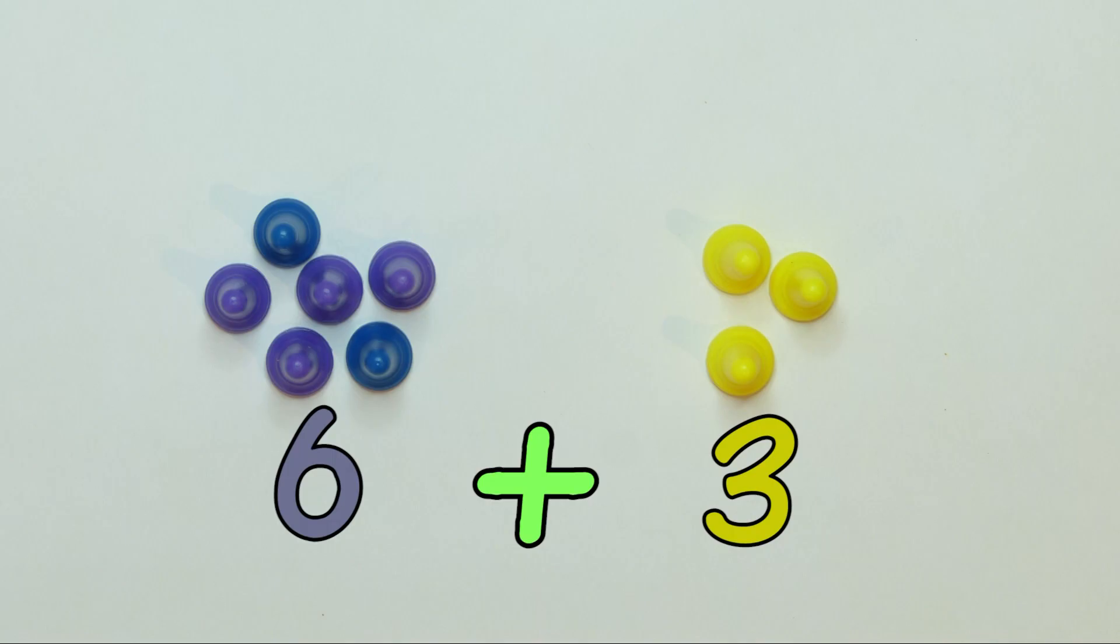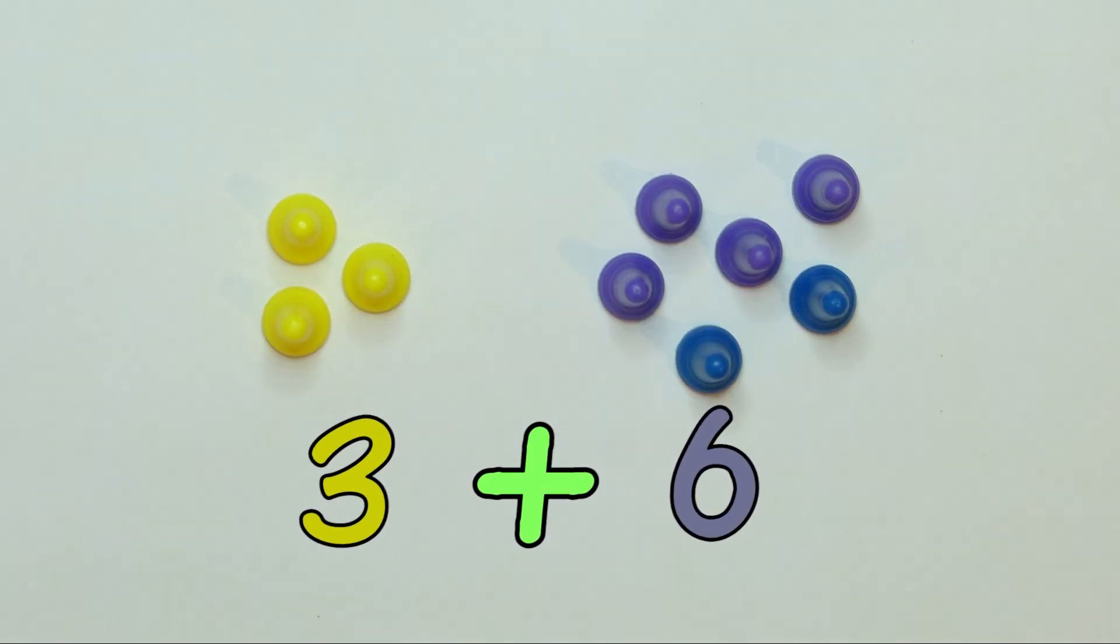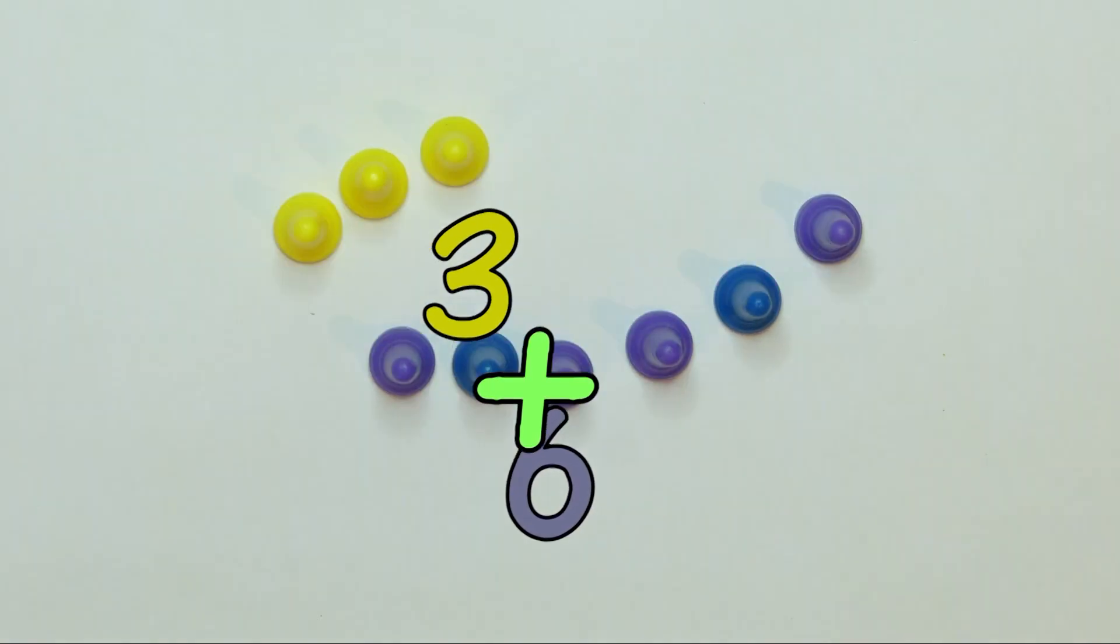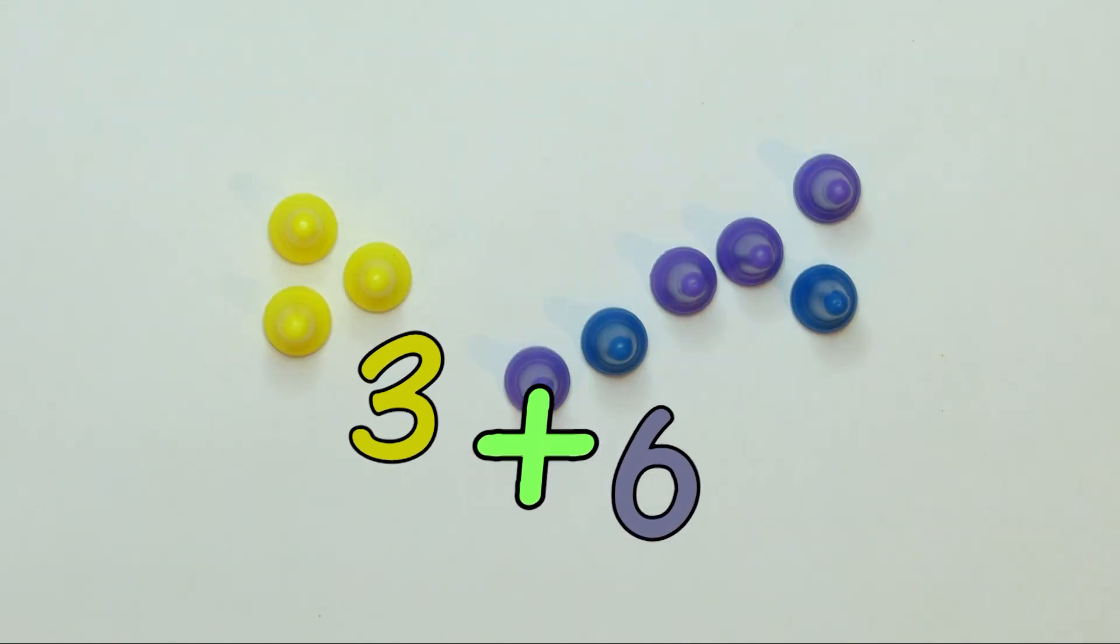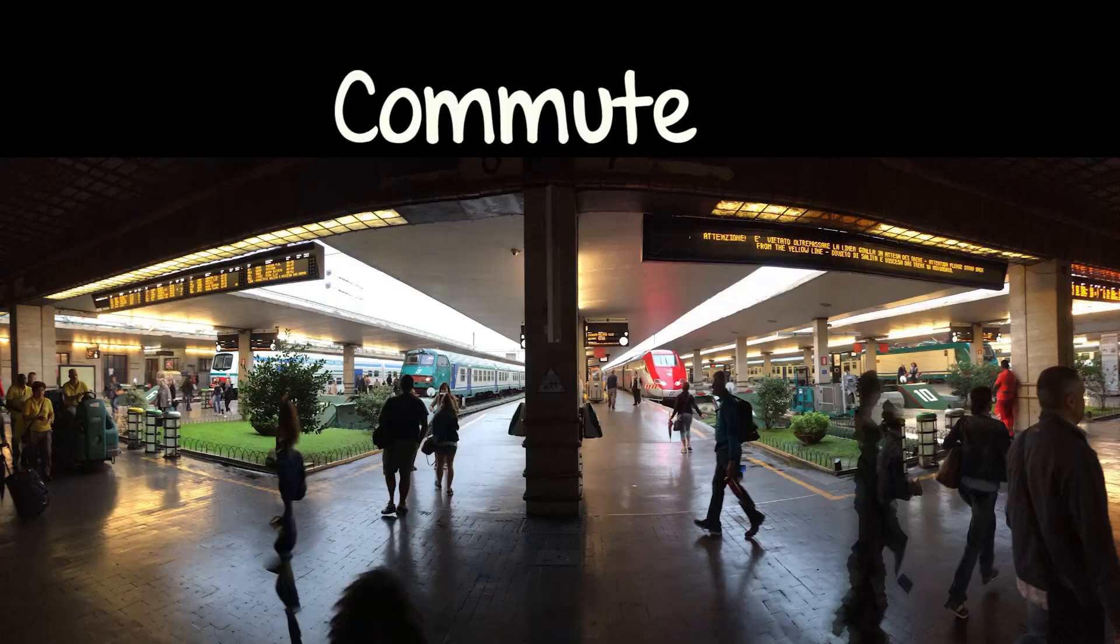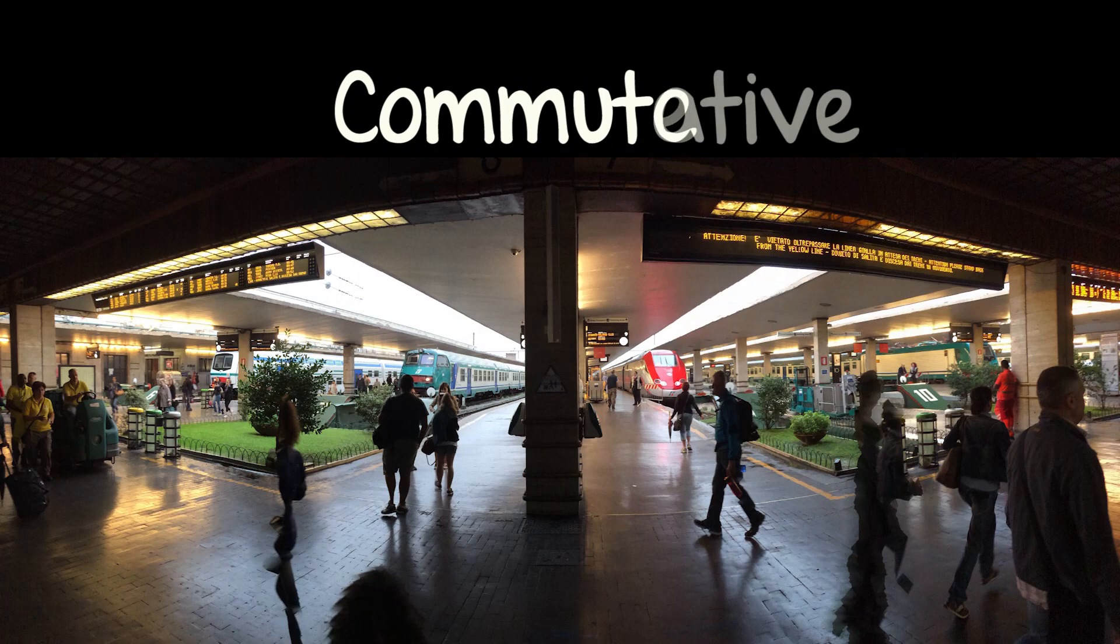Here we see that 6 plus 3 equals 3 plus 6. See how the numbers travel back and forth like a commuter? So we say addition is commutative.